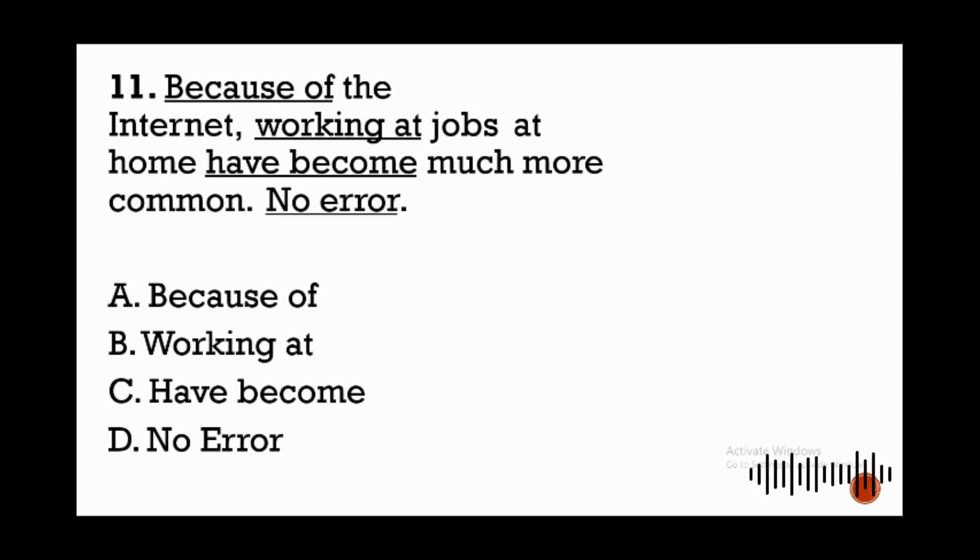From the choices, A: because of, B: working at, C: have become, and D: no error. The part or the words or phrase that makes this sentence incorrect is letter C. The error is have become, which should be has become. The plural form of the auxiliary verb have is incorrect because the subject of the independent clause is working, which is singular.